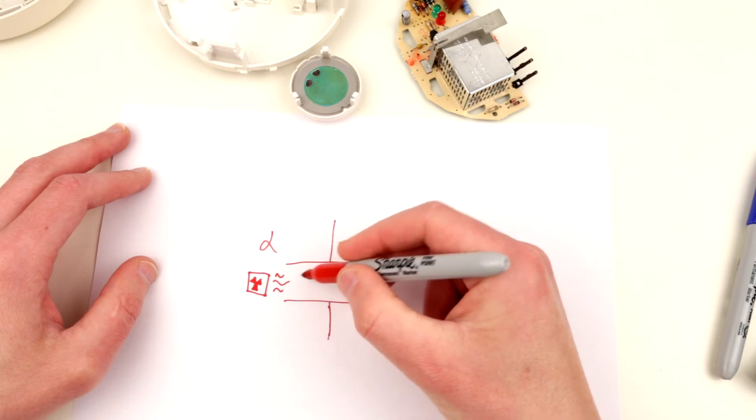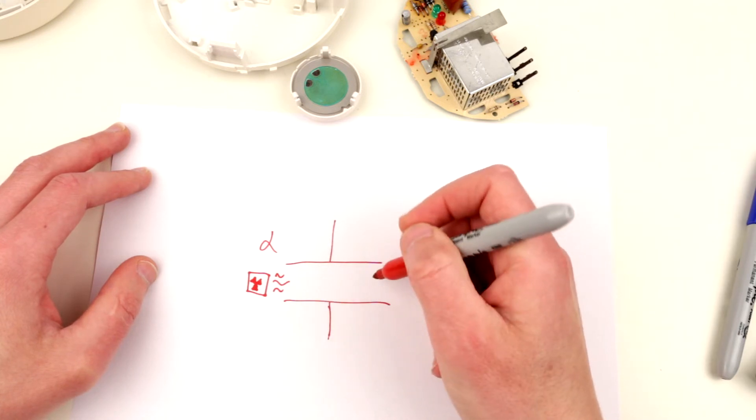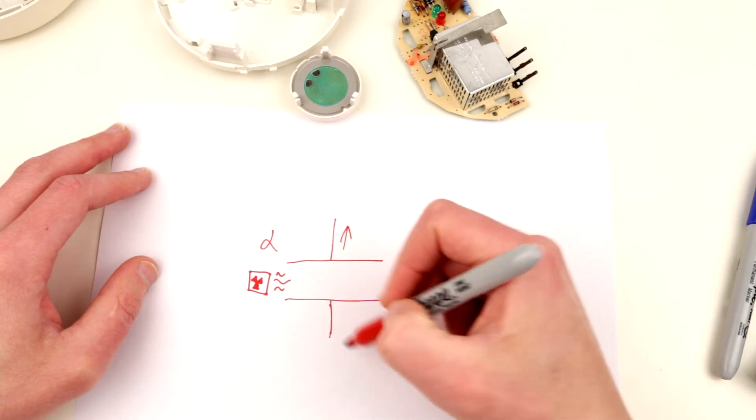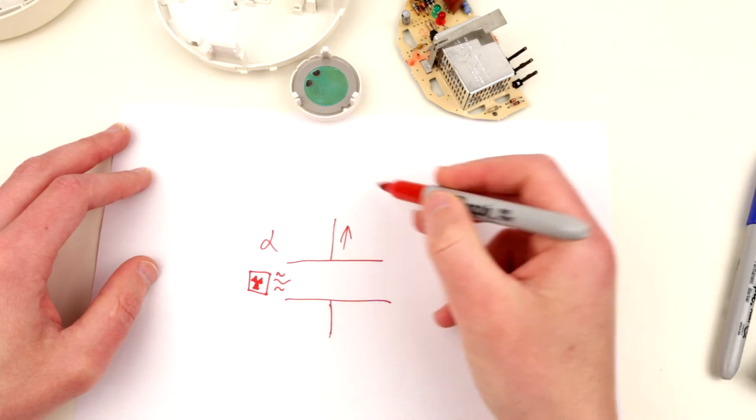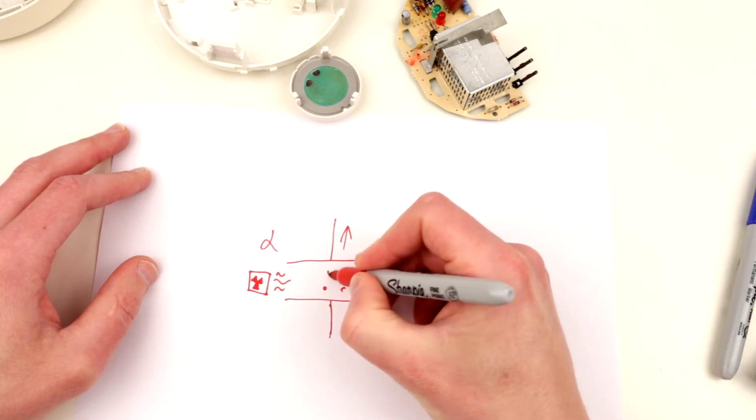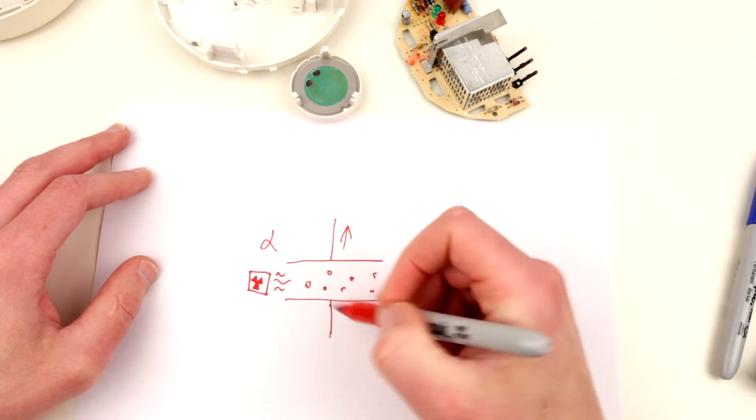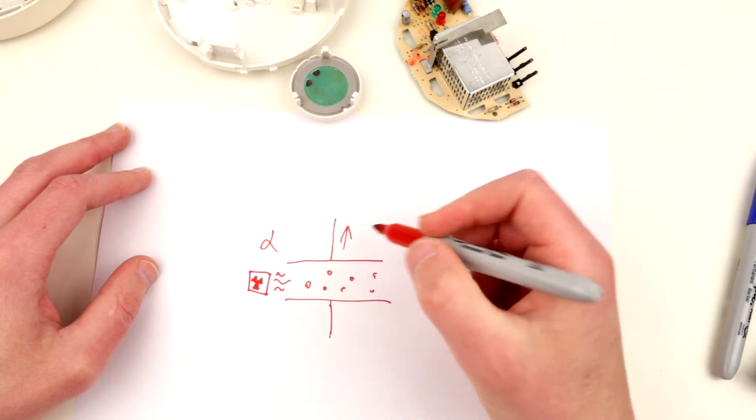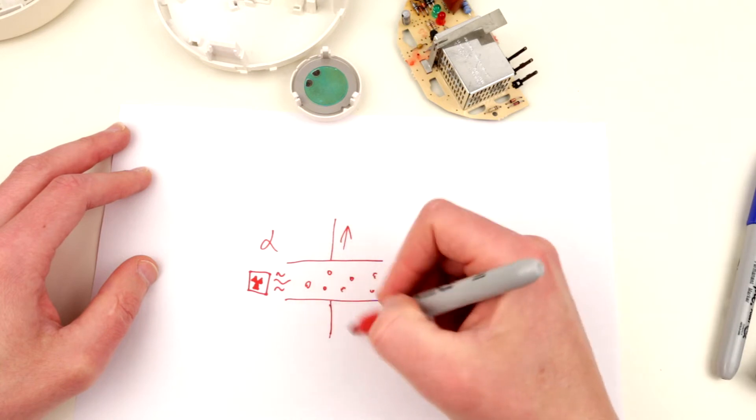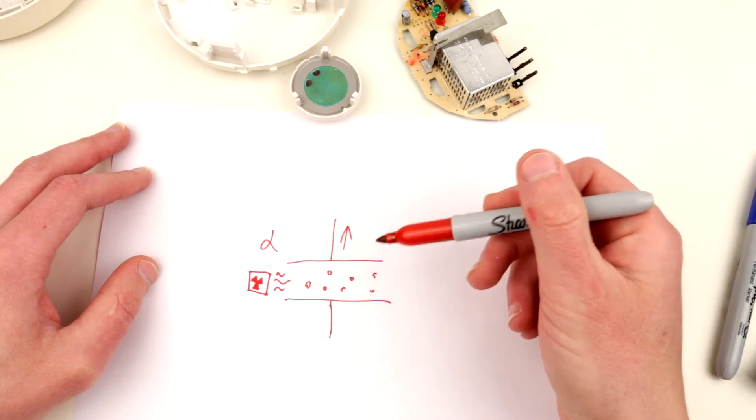And so it's going to emit alpha particles inside this cavity. So obviously it's filled with air. And because alpha particles ionize molecules of the air, they create some sort of electrical current which is going to flow through this sensor. This electrical current is measured.